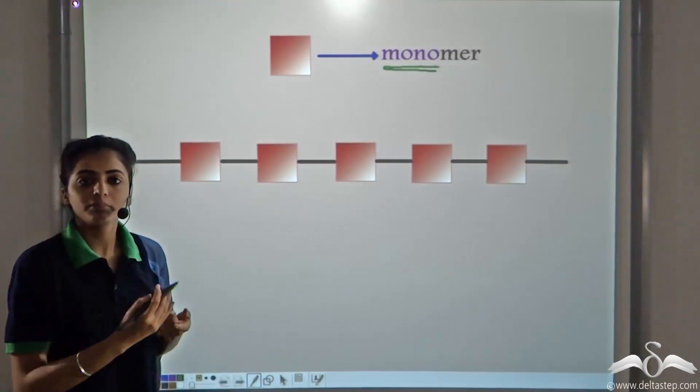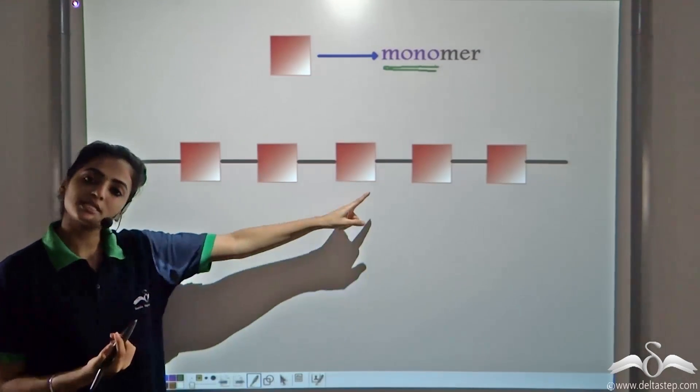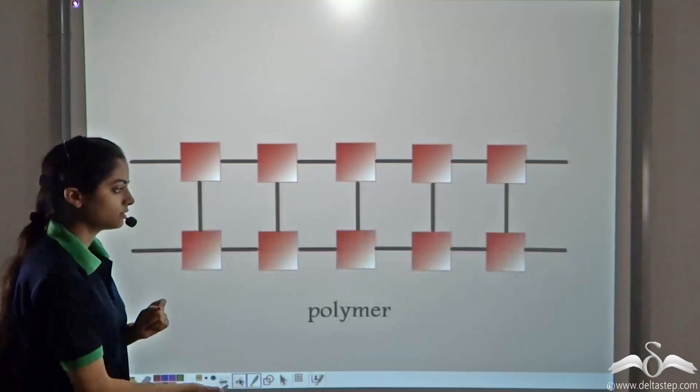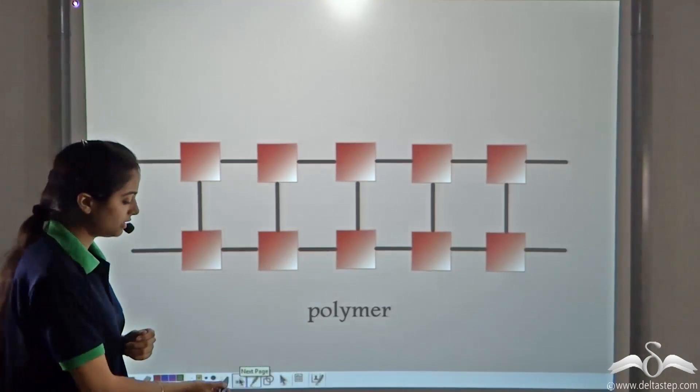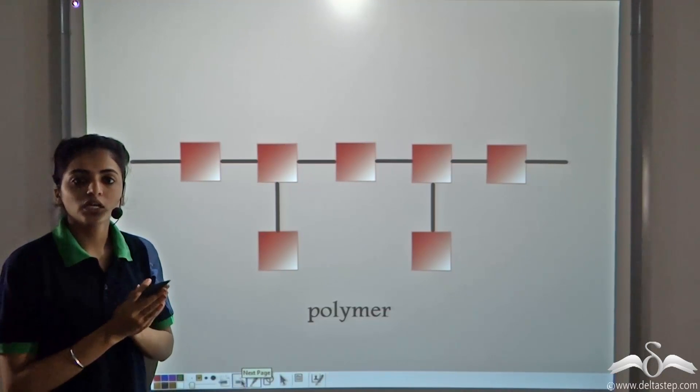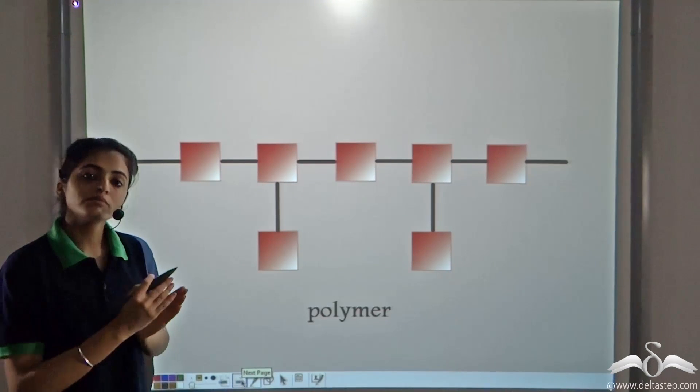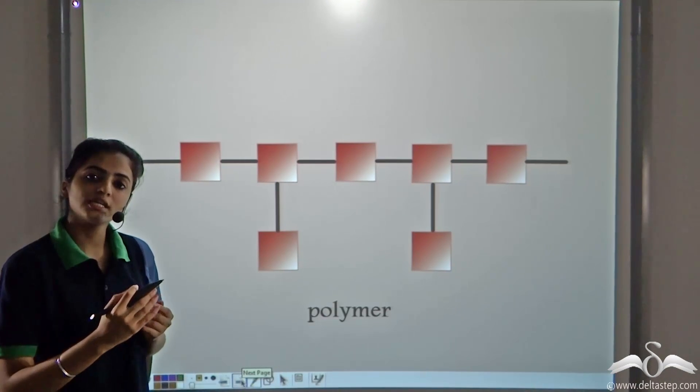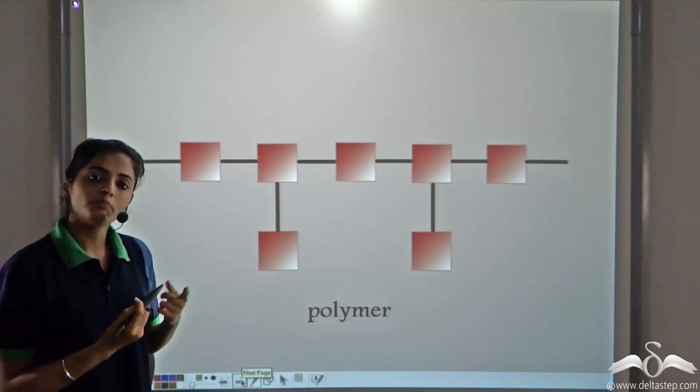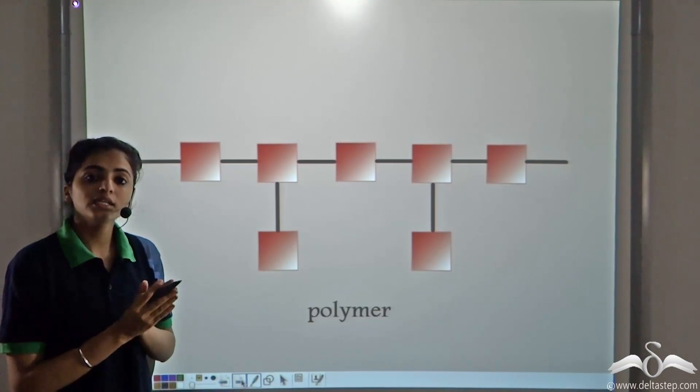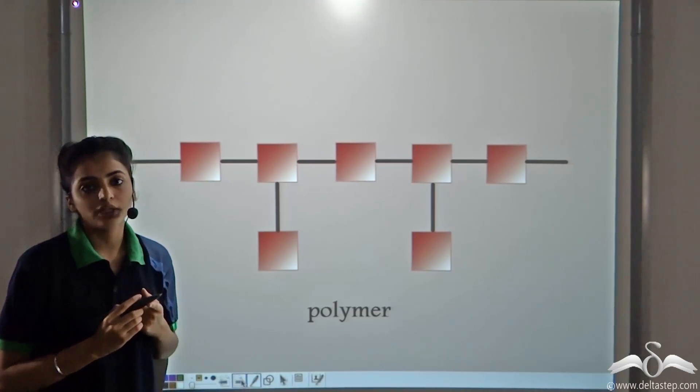So a polymer can be in different forms. It can be a single long chain. It can be a branched chain. The branches can be in different forms. So whenever a monomer forms chains, long chains in different forms. It forms straight long chains, or branched long chains. These long chains, we call polymers.